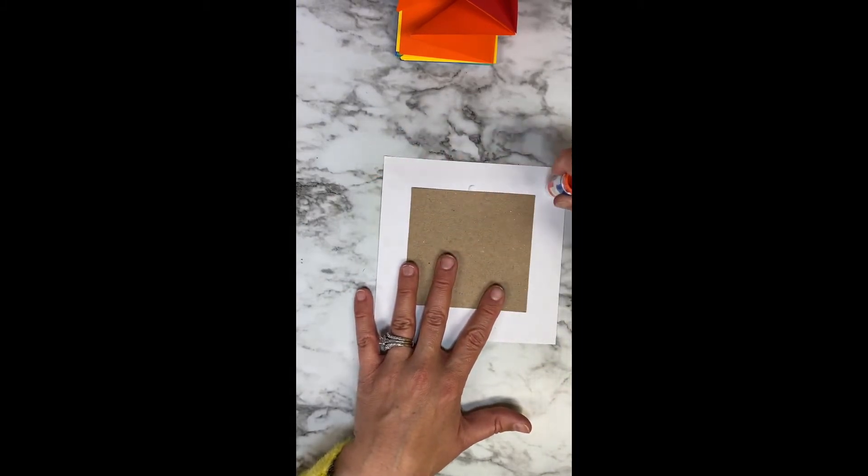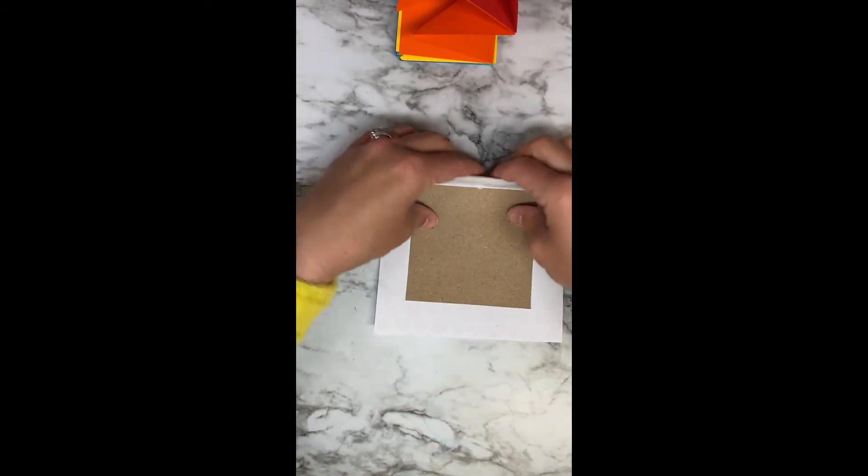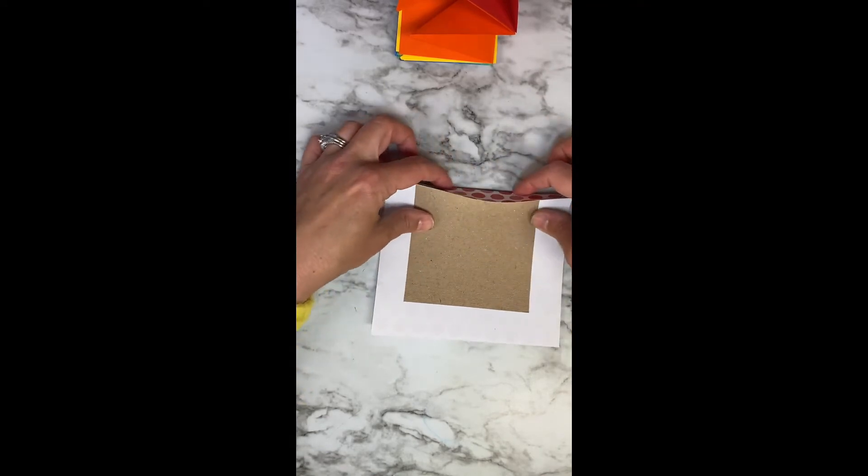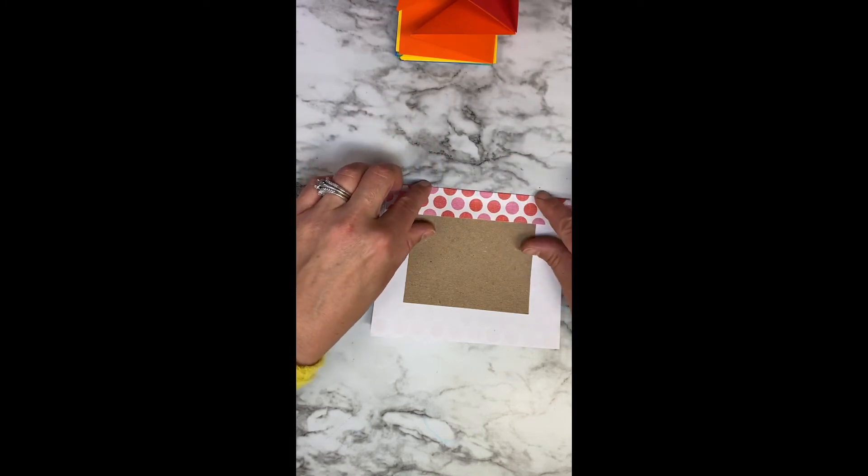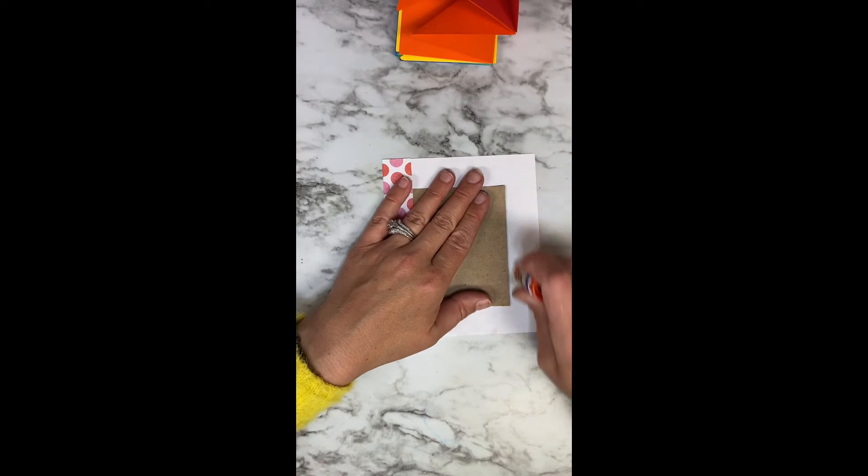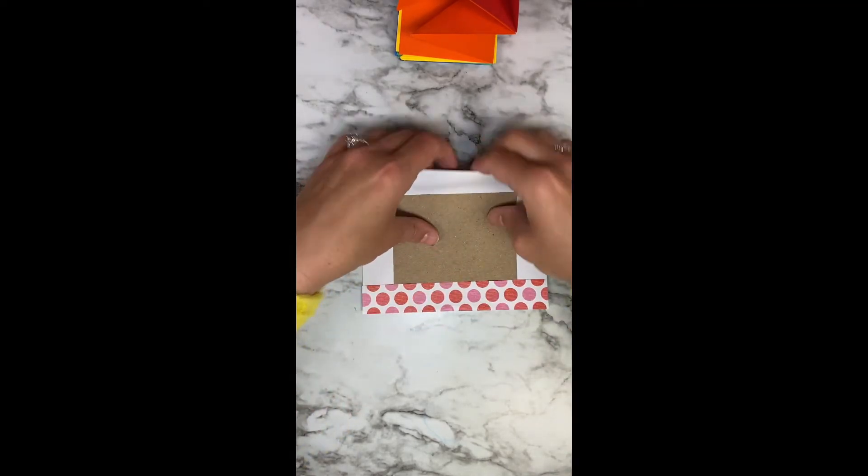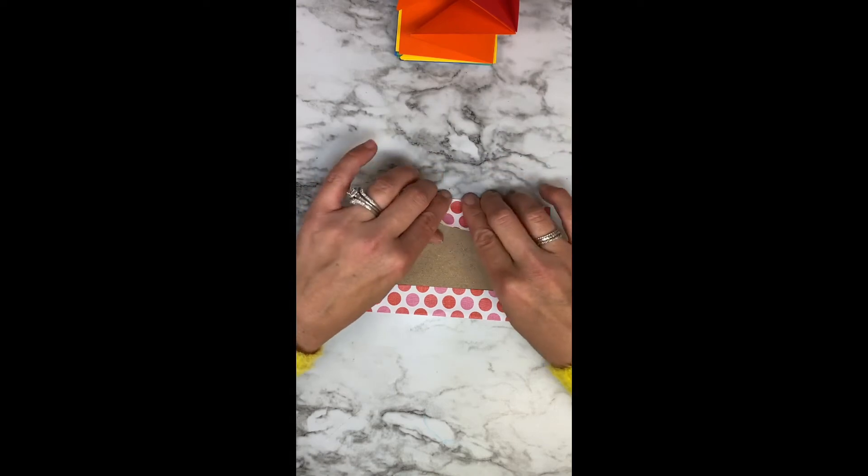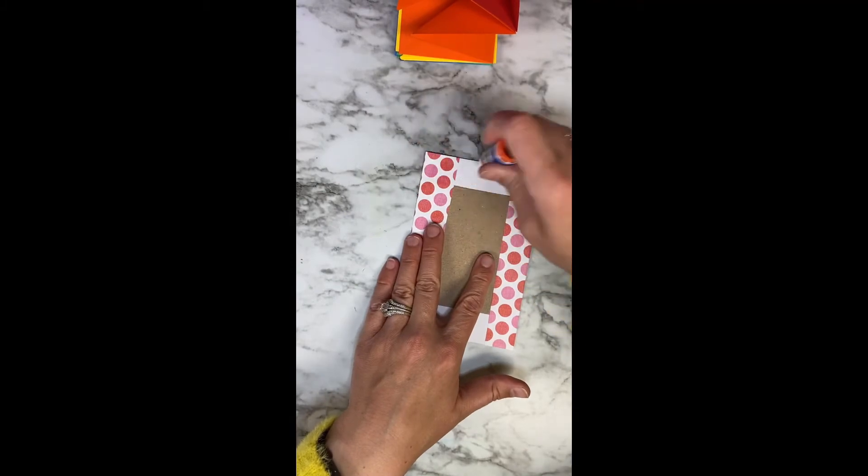From here, I tell the kids pick one side, fold down one side, cover it with glue, fold and crease along the edge of the cardboard and just press down. Go to the opposite side, cover with glue, press up against your cardboard and then do the other two sides.